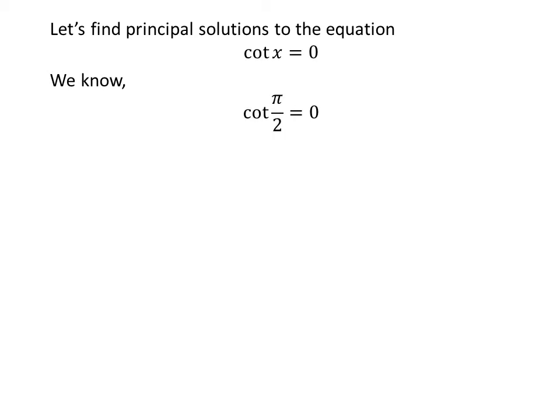We know the value of cotangent of pi over 2 is equal to 0. We also know the trigonometric identity: cotangent of pi plus a is equal to cotangent of a. The proof of this identity is given in the video appearing in the upper right corner, and the link is also given in the description section.